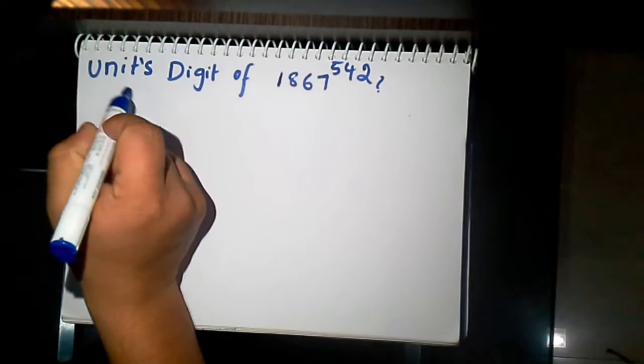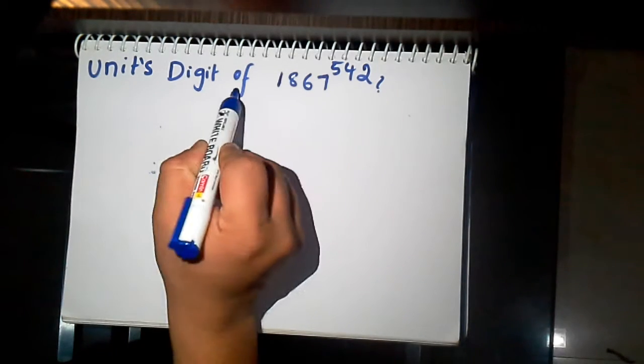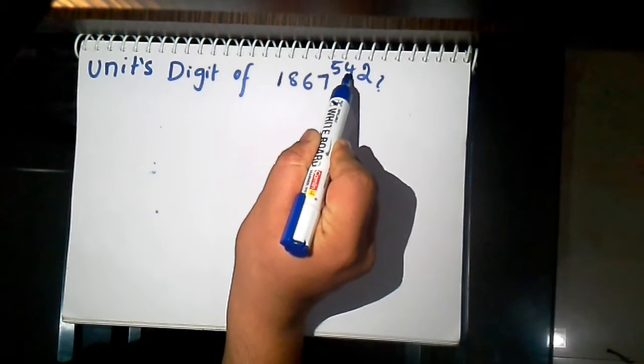Welcome. Now find the unit's digit of 1867 whole power 542.